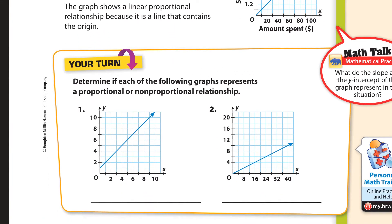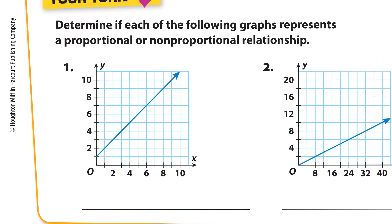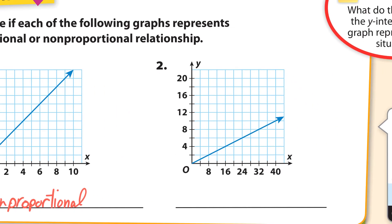Let's determine if each of the following graphs represents a proportional or non-proportional relationship. Well, this one's going to be non-proportional right here. It doesn't cross the origin. And this one on the right, this one will be proportional. It crosses the origin right there. It's a straight line. Easy.